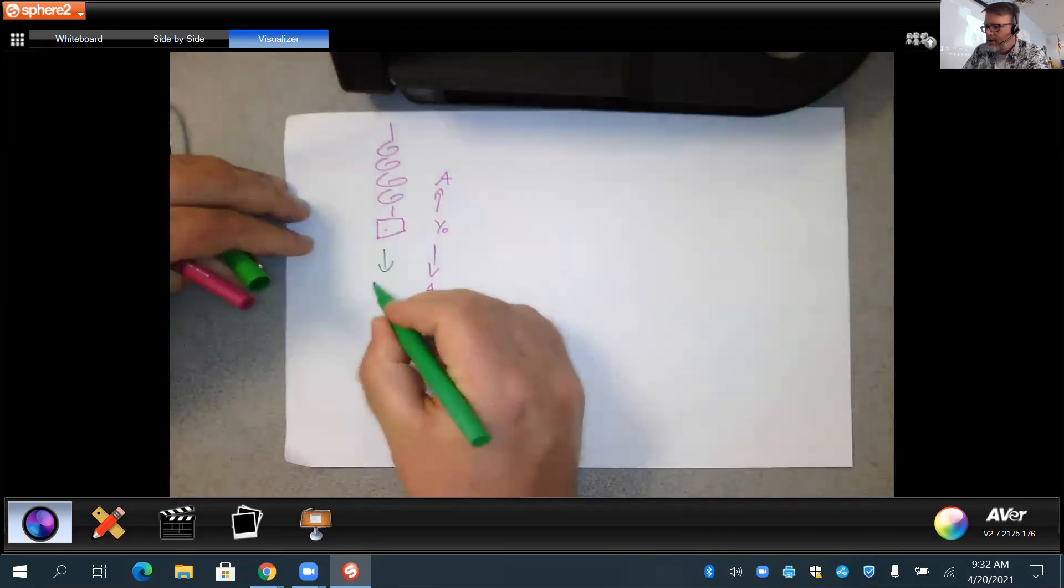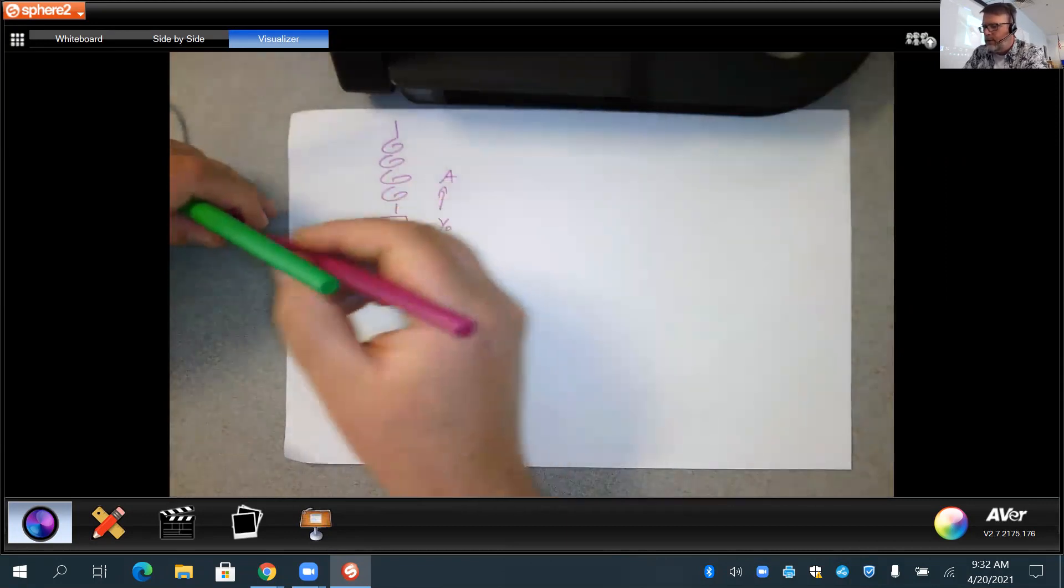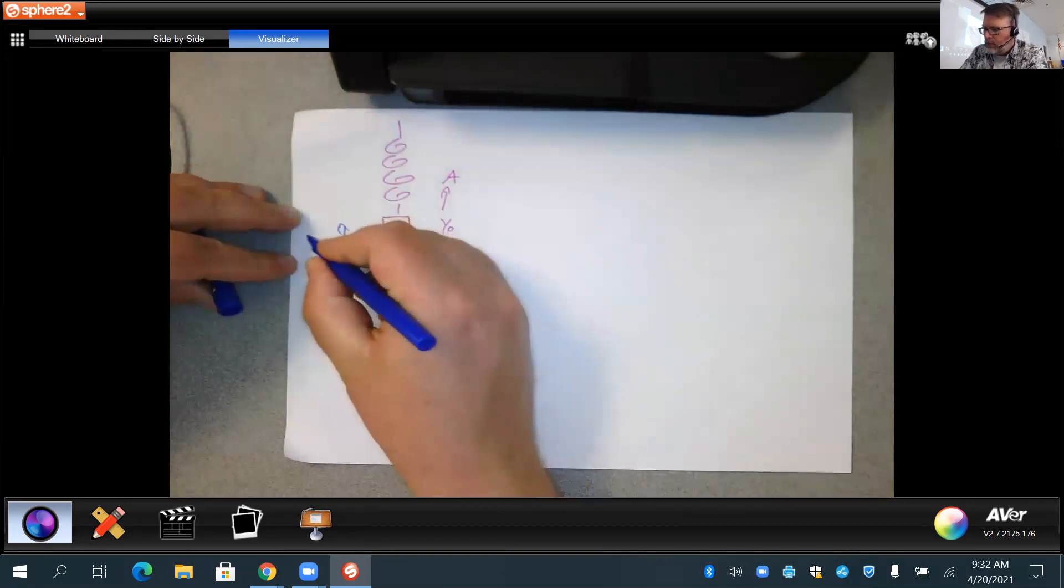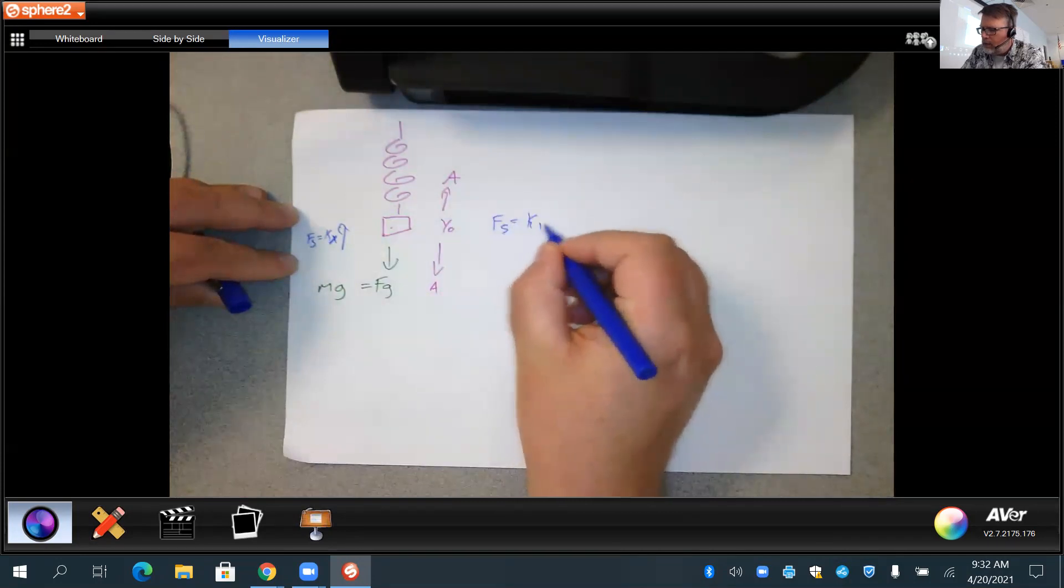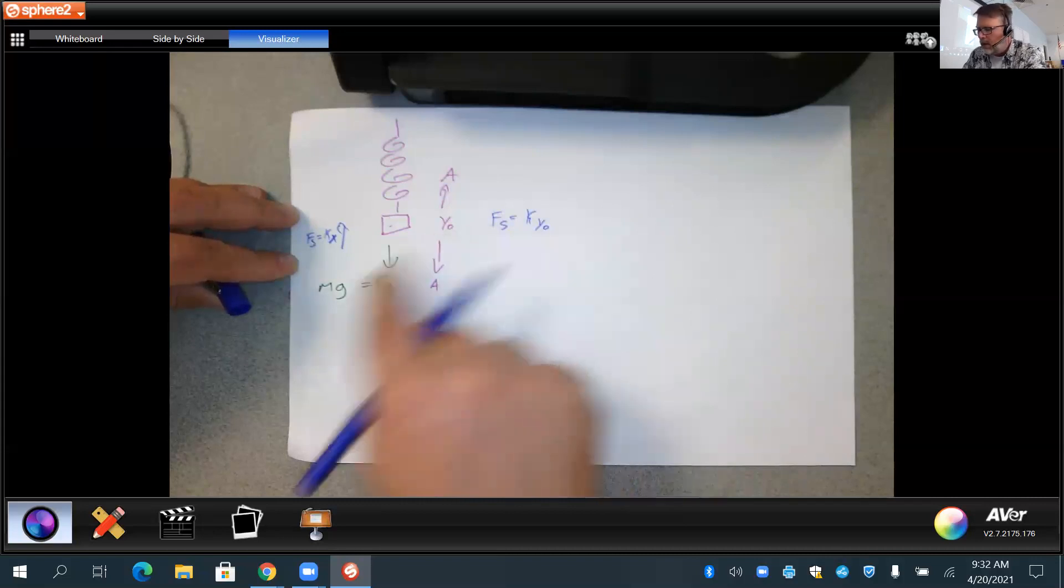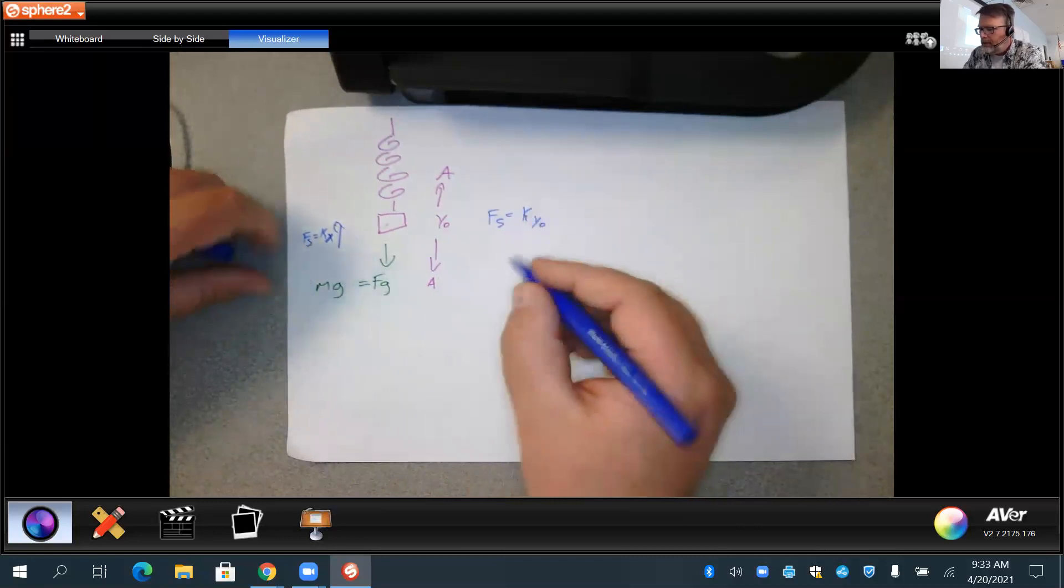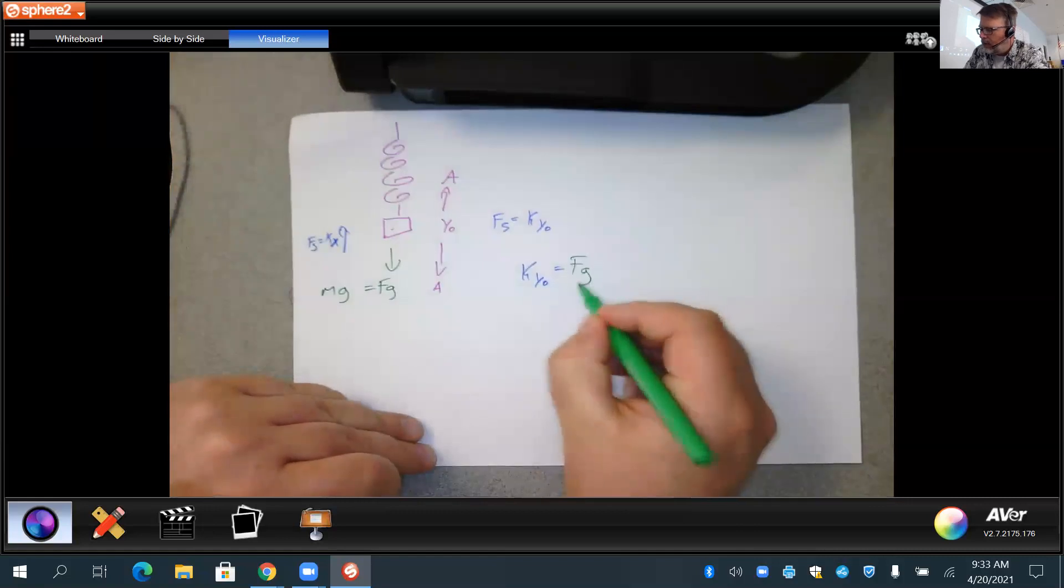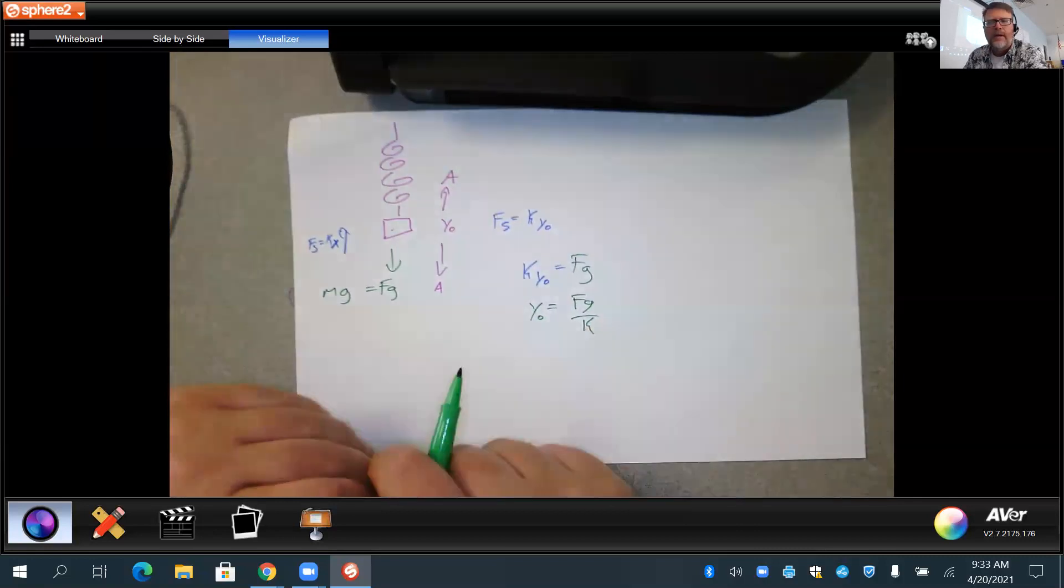So now here we have our diagram. We have the force of gravity going down and we have the force of the spring. The force of the spring is going to equal Kx, but they said equilibrium. So now the force of the spring is going to equal K times Y naught. Because that's equilibrium. So now in our expression, if it's at equilibrium, then this force is going to equal that force. So now we can say K Y naught equals Mg. And if we want an equilibrium expression, then that's going to be our equilibrium expression.